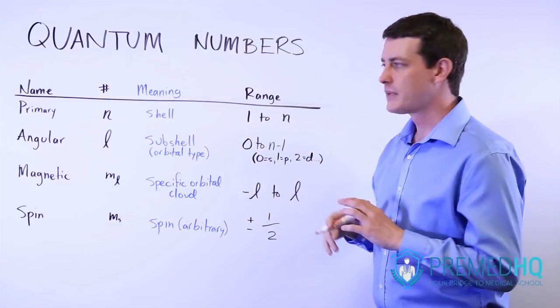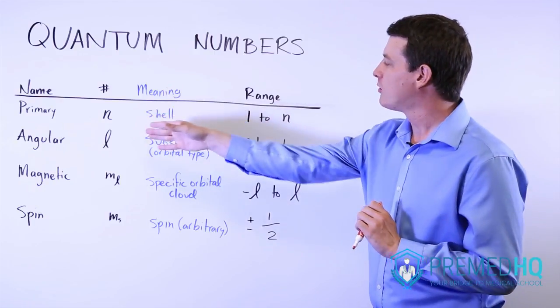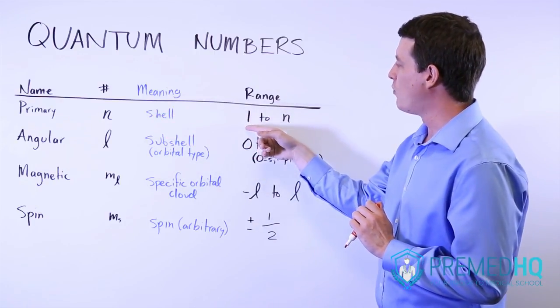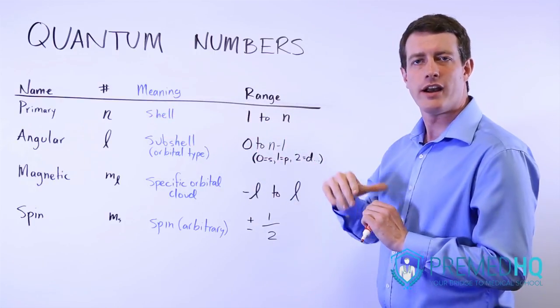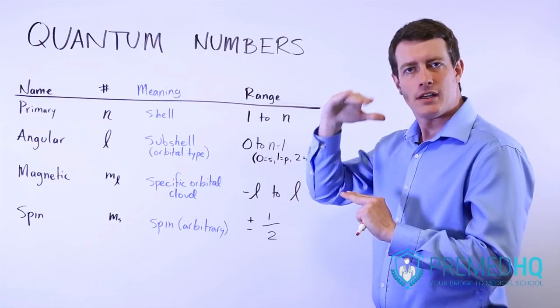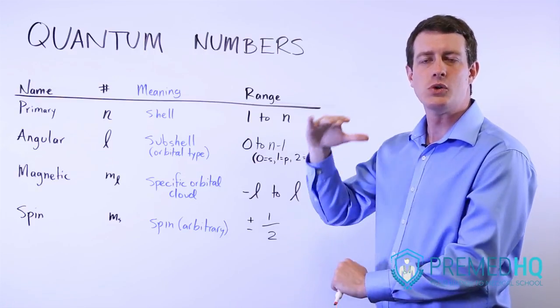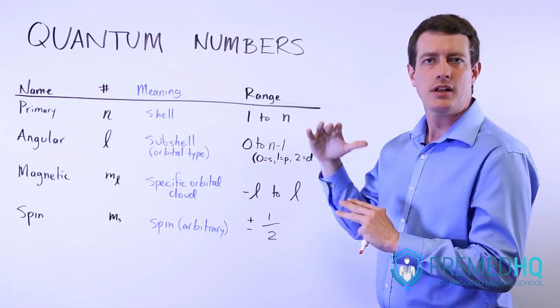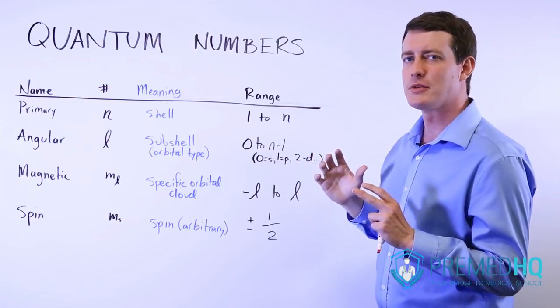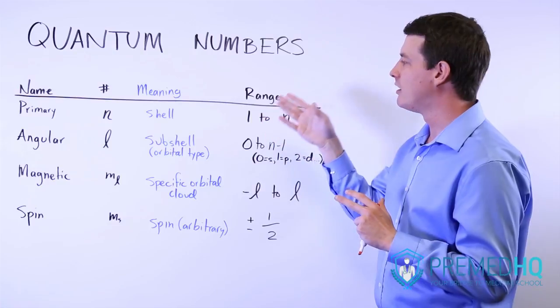And so within any atom, the primary quantum number can have a value from 1 to n, where n is the maximum shell in that atom. So if it goes up to a 3d, for example, then an electron within that atom could have a primary quantum number of either 1, 2, or 3.